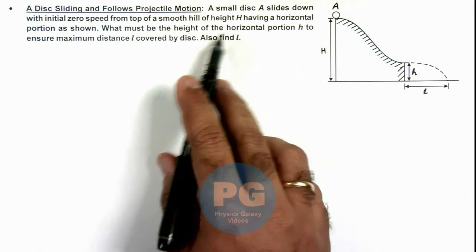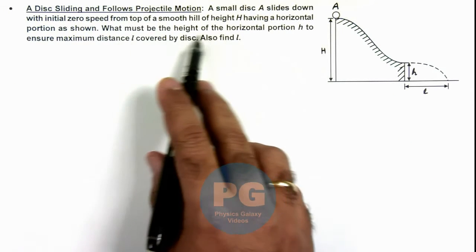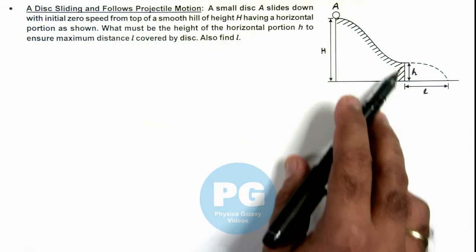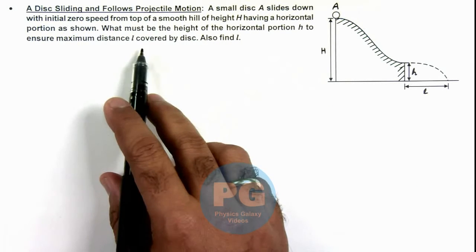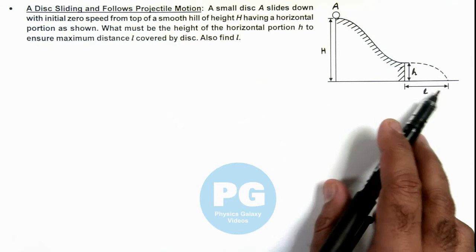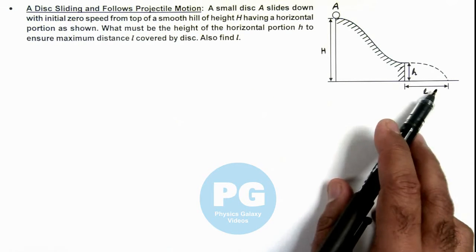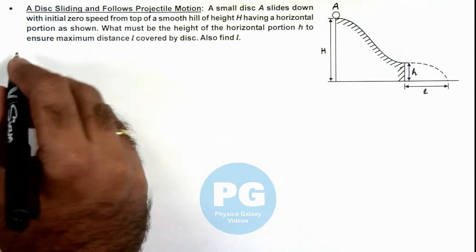It is asking what must be the height of the horizontal portion h (small h) to ensure maximum distance L covered by the disc on the ground. We are also required to find the value of this L.